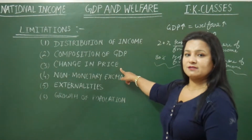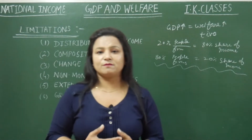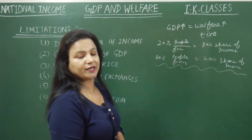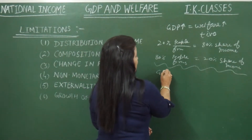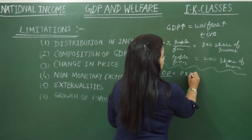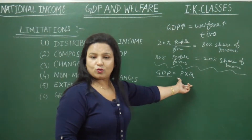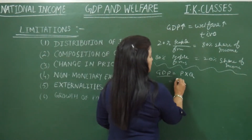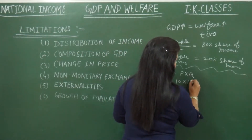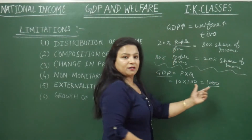The third point is change in price. If price changes, the people's welfare may not change. The value of GDP is price multiplied by quantity. Suppose the price is 10 rupees per unit and the quantity is 100 units — this means the value of GDP is 1000.